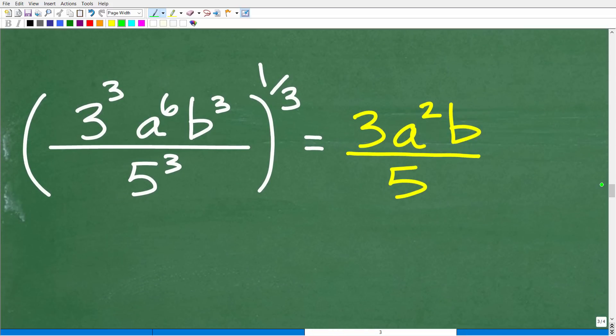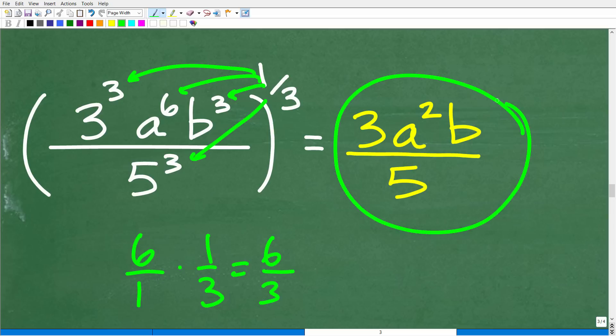So let's go and do that now. 1/3 times 3 is 1, so that's 3 to the 1st. 1/3 times 6, 6 over 1 times 1/3 is 6 over 3, which of course is 2. So that's a to the 2nd power right there. 1/3 times 3 again is 1 or b to the 1st. Now you don't have to write to the 1st power. It's kind of implied. Same thing right here with 3. That is 3 to the 1st. So we have a squared. And then this 1/3, we can multiply down to that 5 to the 3rd power, which is going to be 5 to the 1st or 5. And there you go.